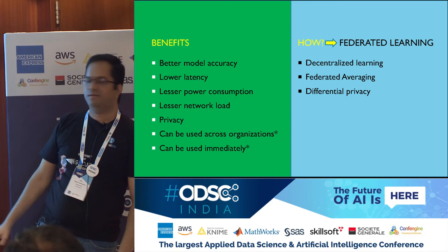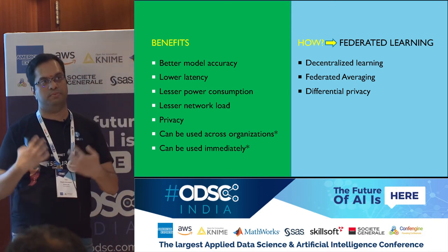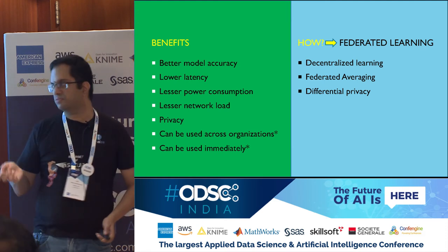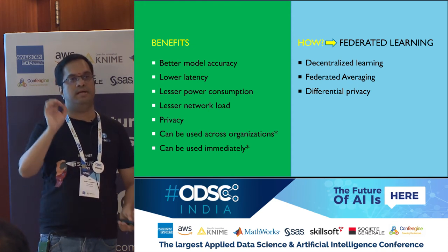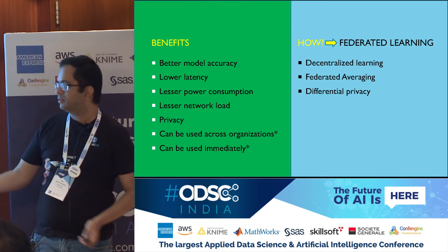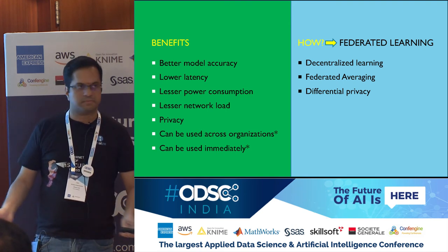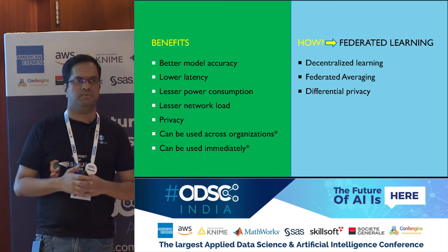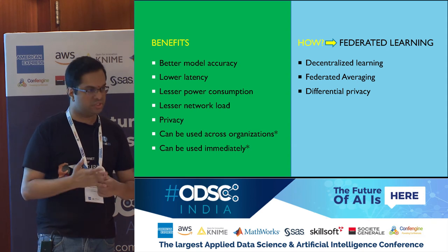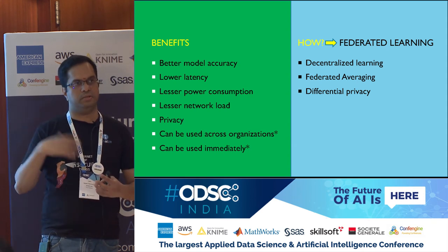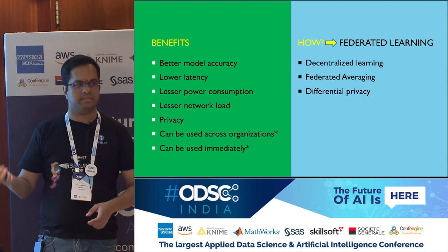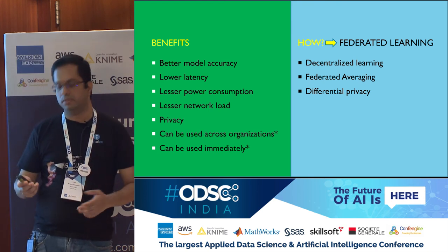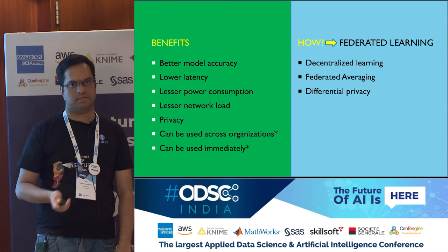To summarize: we have better model accuracy because we can take in a lot more data. Not all data can be moved to the cloud with IoT devices, given various challenges. It provides lower latency in terms of prediction and consumes less power because you are only transferring model weights, not the entire data. It makes the system privacy-focused. And because you are encrypting, you can move it across organizations without worrying about GDPR and other regulations. Using a pre-trained model, you can deploy it immediately. In summary: decentralized learning, federated averaging, and differential privacy can help you build truly privacy-centric models.